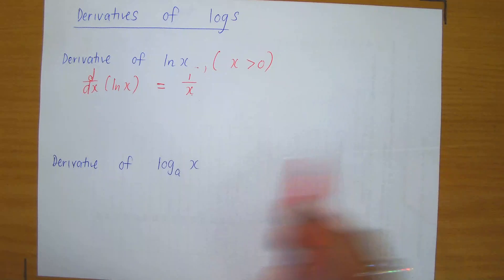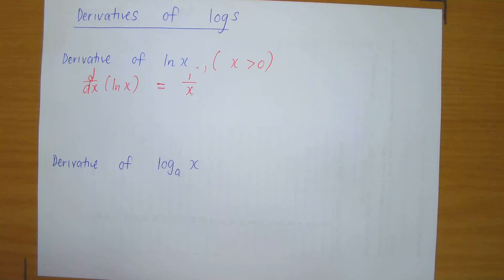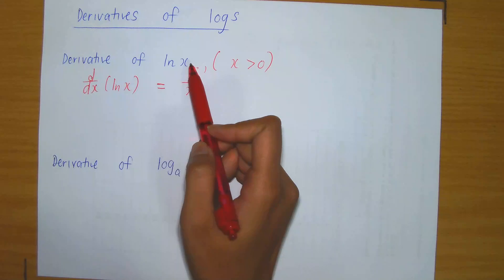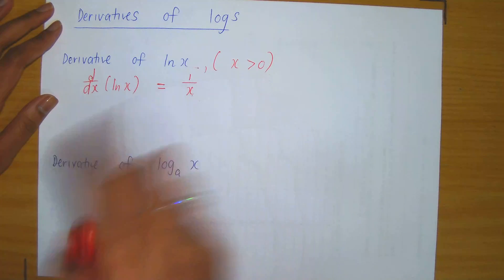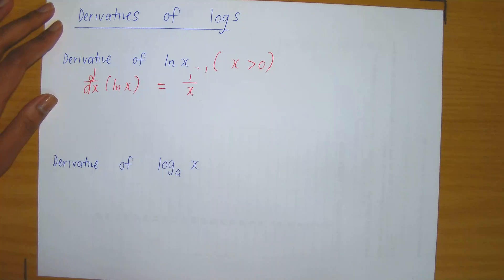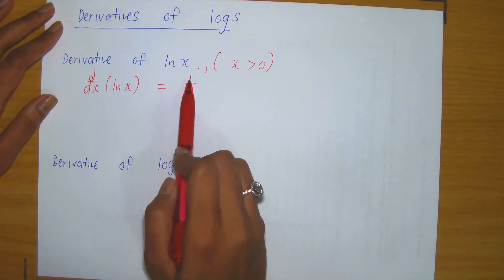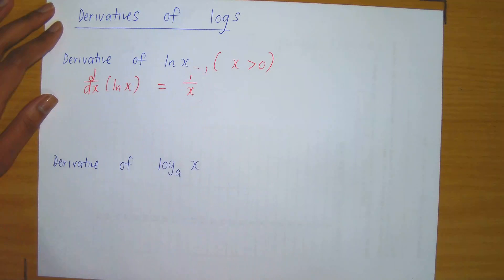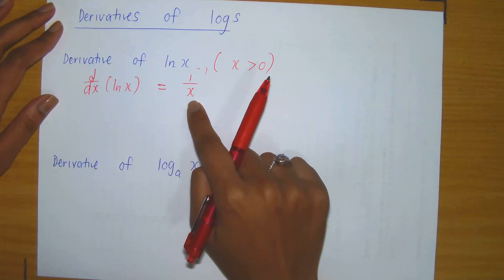In this video lecture, I'm going to be discussing derivatives of logarithms. Recall from before, we were introduced to the natural log, sometimes referred to as ln of x. So in the case when we are evaluating the derivative of ln of x for whenever x is greater than 0, then we have the following formula: the derivative of ln of x is equal to 1 divided by x. Notice that this is certainly defined for the denominator cannot be 0.